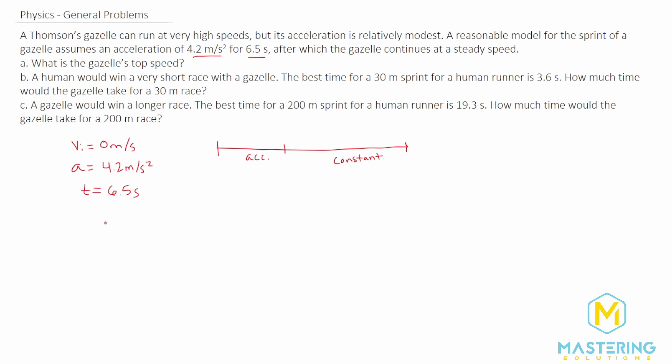So for part A they tell us to find the gazelle's top speed. For one we need to find the final velocity. The equation that we can use is v final equals v initial plus acceleration times time. We've talked in other problems that this is essentially just an expanded form of the acceleration formula. v final minus v initial is delta v so they just added over v initial to this side. The initial velocity though we said is assumed to be 0.